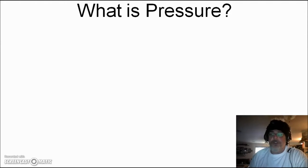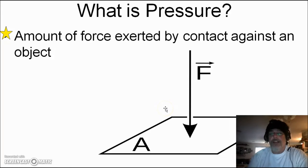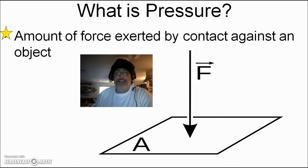First, to understand air pressure, it's a good idea to know what pressure is itself. So what is pressure? Well, pressure is defined as the amount of force that is exerted by contact against an object. So you can see this diagram located right here, you can see that there is a force being applied over a given area. So force over a given area is pressure.